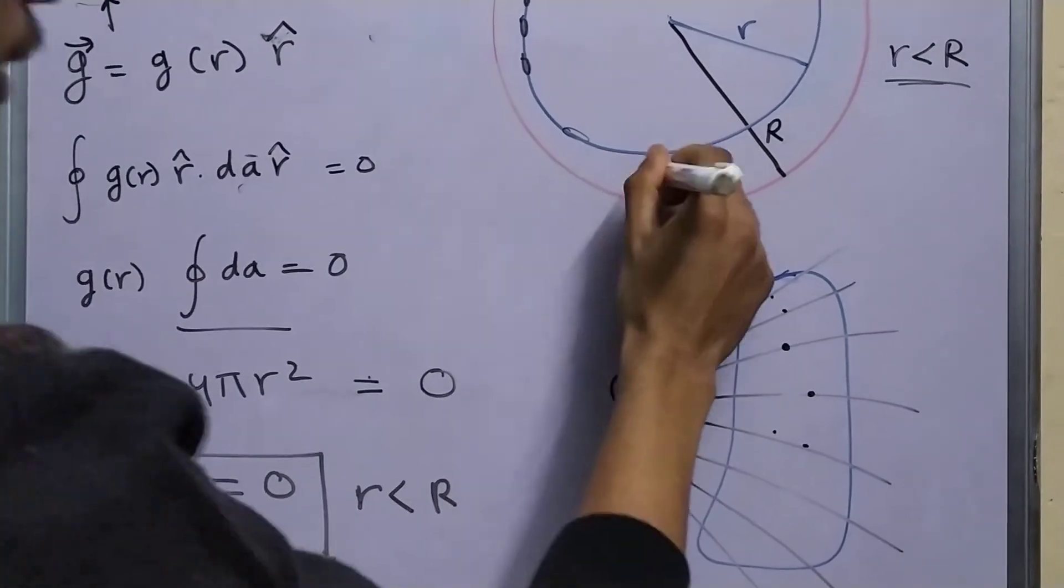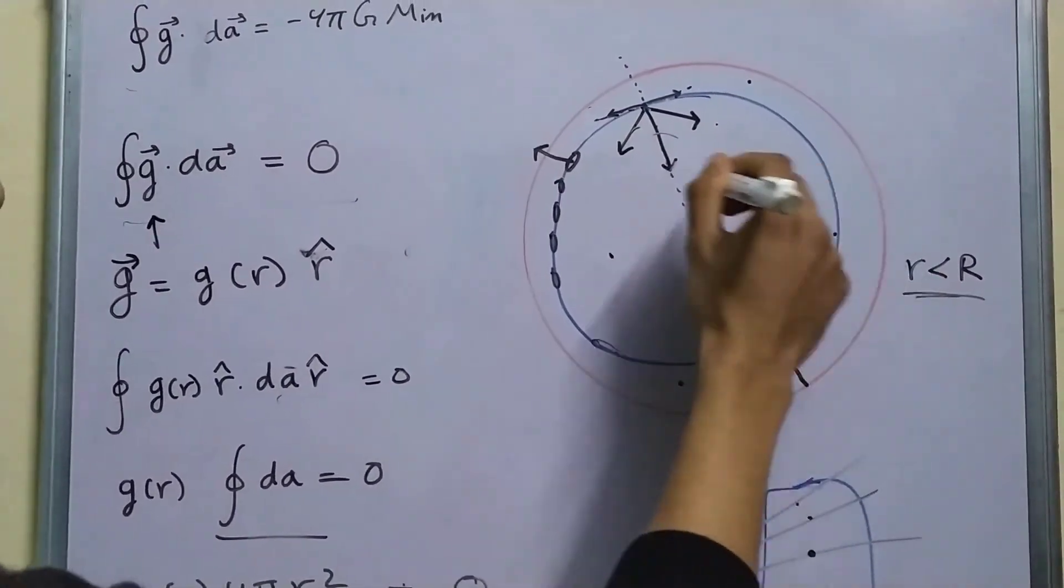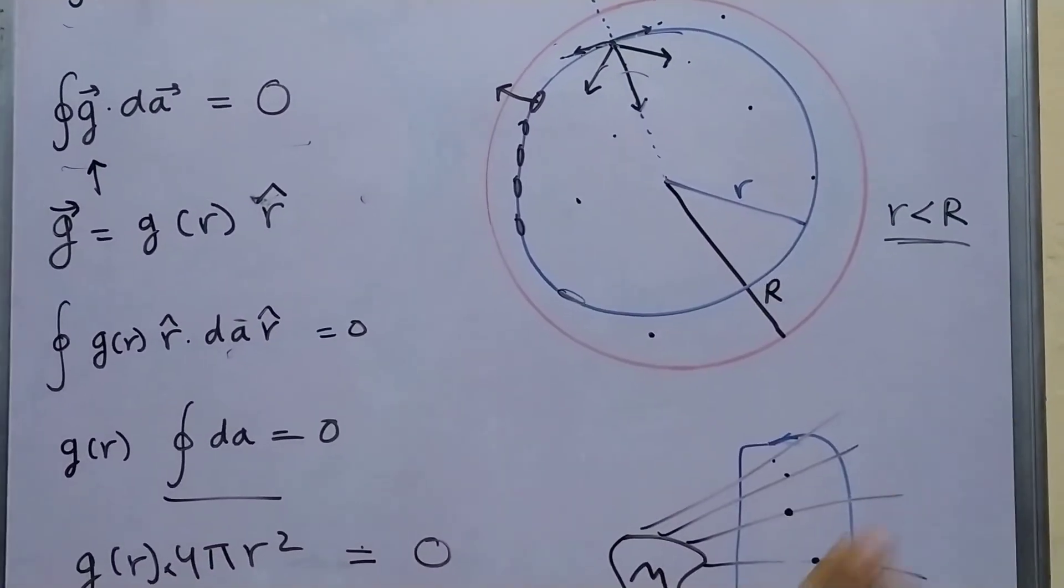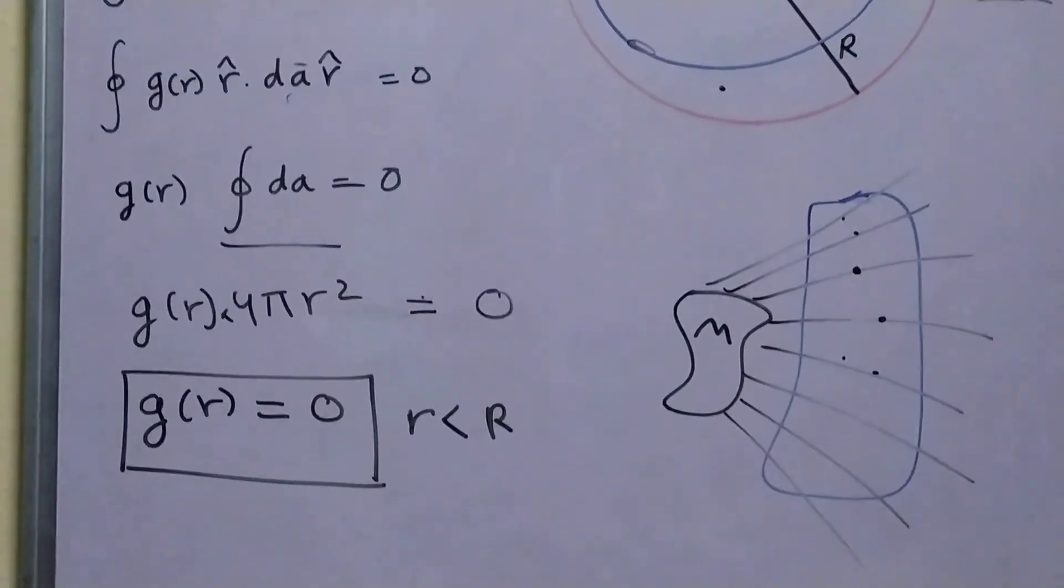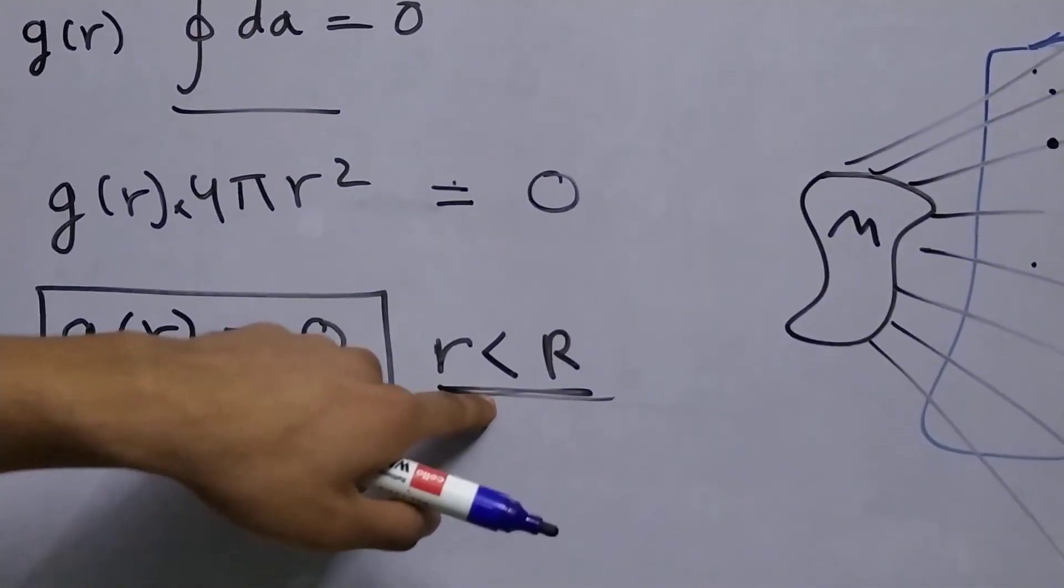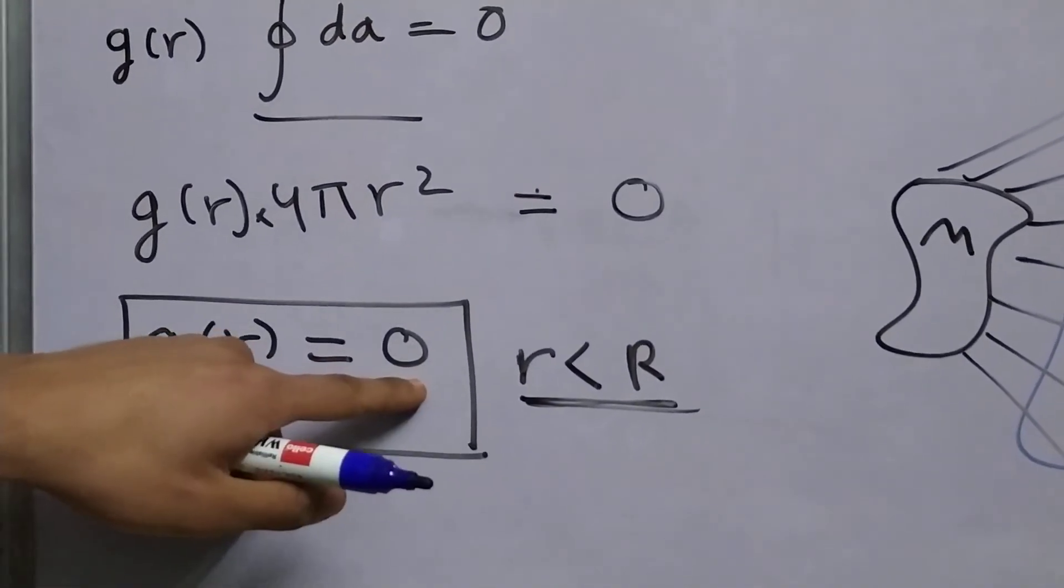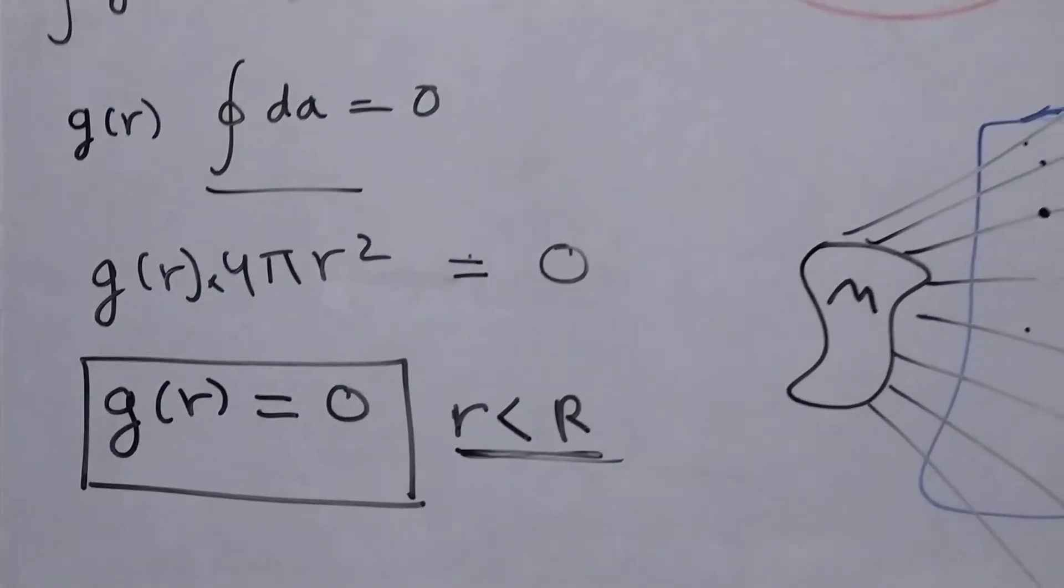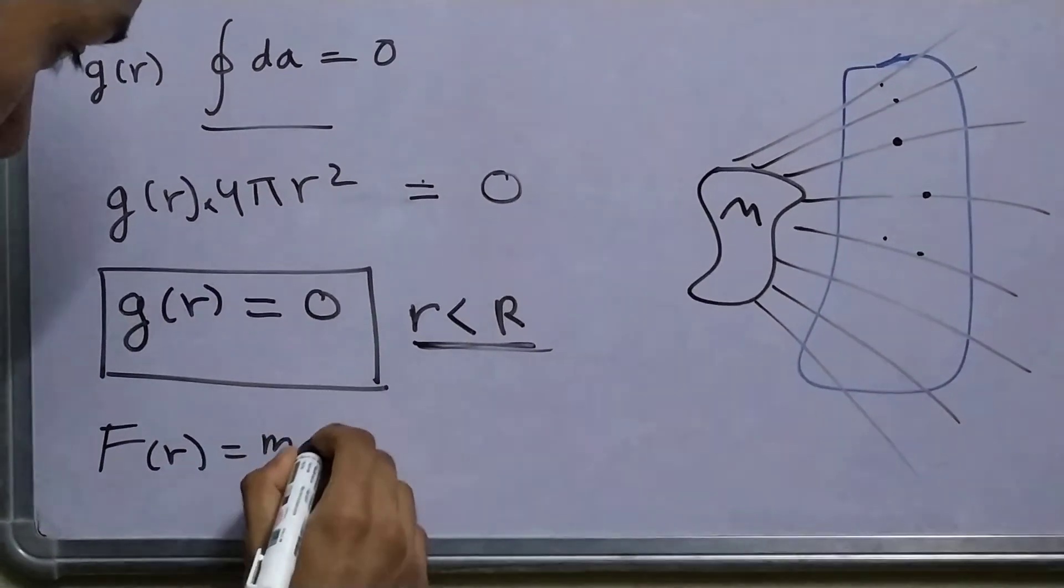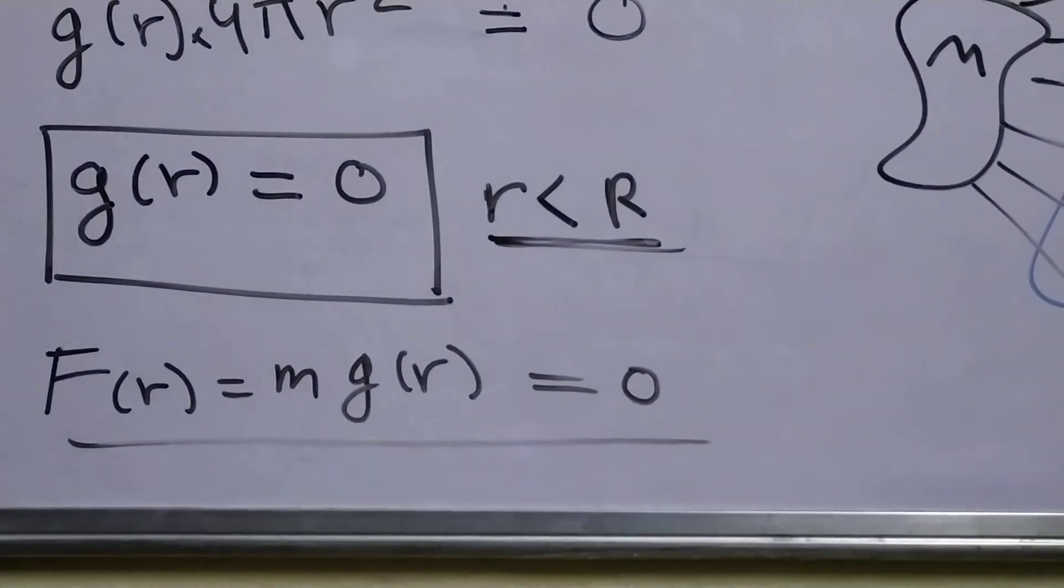Now, this means no matter where you are, no matter this point, this point, this point, you can be at r by 2, you can be at r by 3, r by 4, it doesn't matter. As long as this condition holds, that r is, you are inside the sphere, your field inside will be zero. And the force is nothing but your mass times field which will obviously be equal to zero.